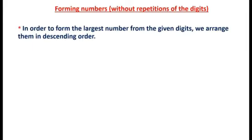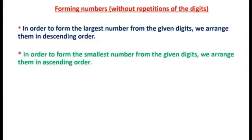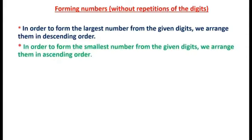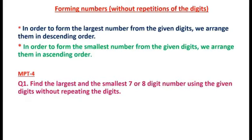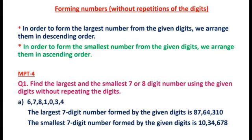To form the largest number from the given digits, we arrange them in descending order. To form the smallest number from the given digits, we arrange them in ascending order. These two things you need to remember. For question number one: find the largest and smallest seven-digit number using the given digits 6, 7, 8, 1, 0, 3, 4 without repeating the digits.